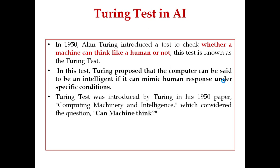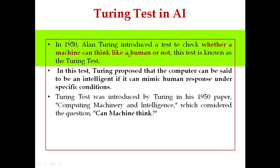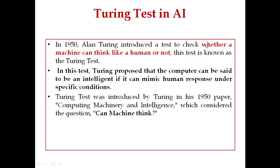Now coming to the Turing test in AI: in 1950, Alan Turing introduced a test to check whether a machine can think like a human or not. That was the main objective — whether a machine can think like a human — and this test is known as the Turing test.